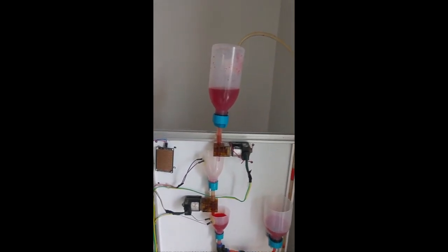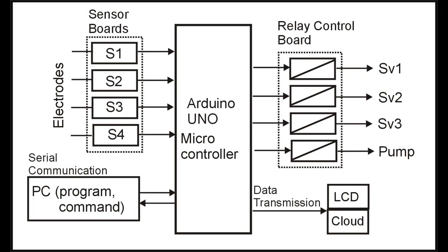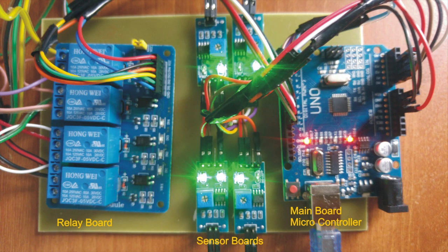We also have an electronic control board used to control the whole system. I would like to explain how it works. Liquid detection electrodes send signals to the Arduino, and the Arduino, which is connected to the computer, sends the necessary commands to the valves. While doing that, all data are recorded.